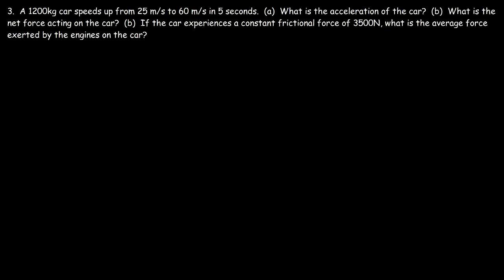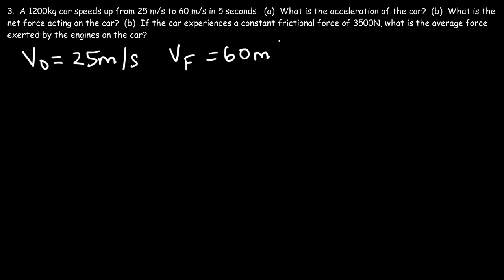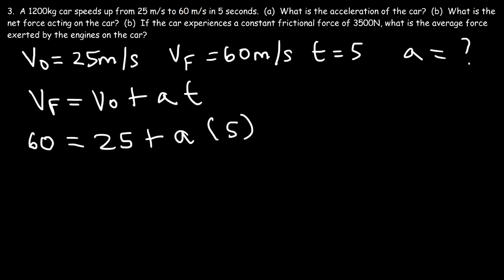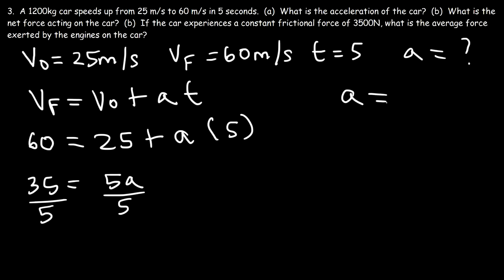This is the last problem. A 1200 kilogram car speeds up from 25 meters per second to 60 meters per second in 5 seconds. What is the acceleration? We have initial speed 25, final speed 60, and time 5 seconds. Using v-final equals v-initial plus at: 60 equals 25 plus 5a. Subtracting 25 from both sides gives 35 equals 5a, so the acceleration is 7 meters per second squared.